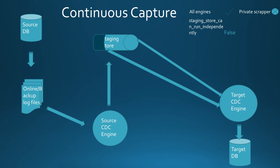The default value for this parameter is true, which means that subscriptions can create their own log reader processes if a database log entry cannot be found in the staging store. Changing the parameter to false causes all subscriptions to work off the same staging store, in effect creating a single scrape staging store.